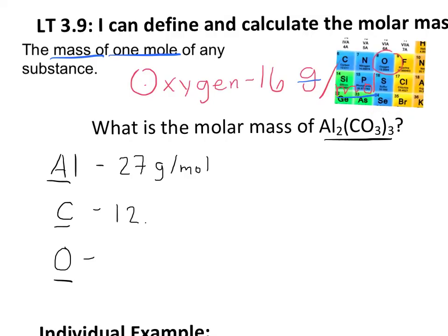And once again, oxygen has a molar mass of roughly 16. So once again, about 12.0 grams per mole. And oxygen has a molar mass of about 16 grams per mole.